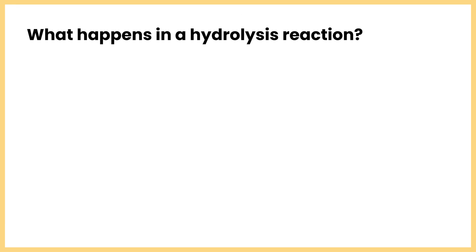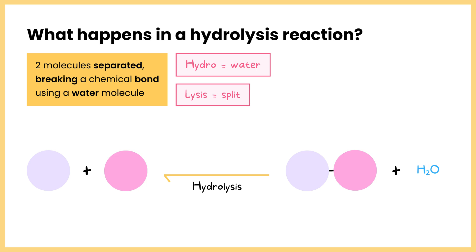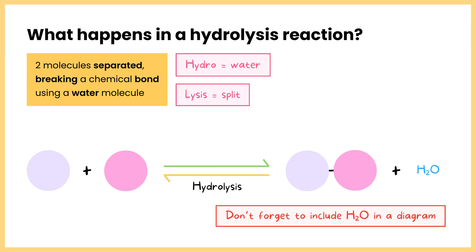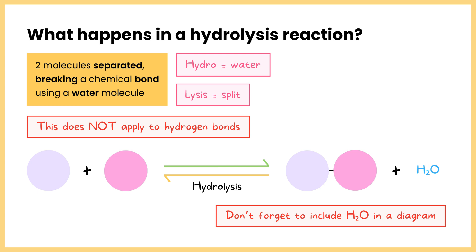A hydrolysis reaction is basically just the opposite of a condensation reaction. Two molecules that were joined together will be separated — importantly, that breaks the chemical bond using a water molecule. To remember that, break down the word: hydro means water and lysis means to split, so it's splitting using water. It's worth pointing out that condensation and hydrolysis reactions don't apply to hydrogen bonds, which are just weak associations. So if you're talking about hydrogen bonds forming or being broken apart, don't use the term condensation or hydrolysis or you'll be penalized.